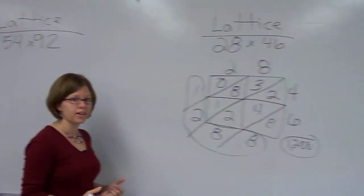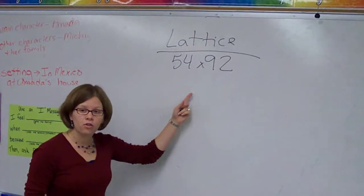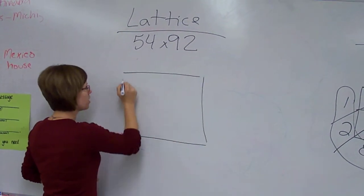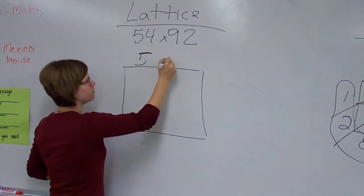Alright, let's do another quick example. I've got 54 times 92. Again, I'm going to draw a box, and write my numbers. 54.